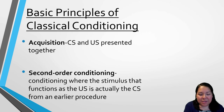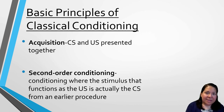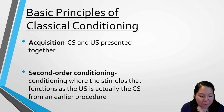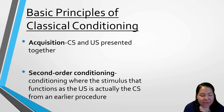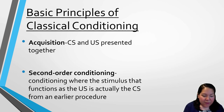The next principle is second order conditioning, where the conditioned stimulus acquires its ability to produce learning from an earlier procedure in which it was used as a conditioned stimulus. Money is a good example — dollar bills are really just pieces of paper, but through classical conditioning we learn that money can purchase things that bring happiness, like clothes and shoes. Though money is not directly associated with happiness, through second order conditioning we automatically link money with happiness or security.